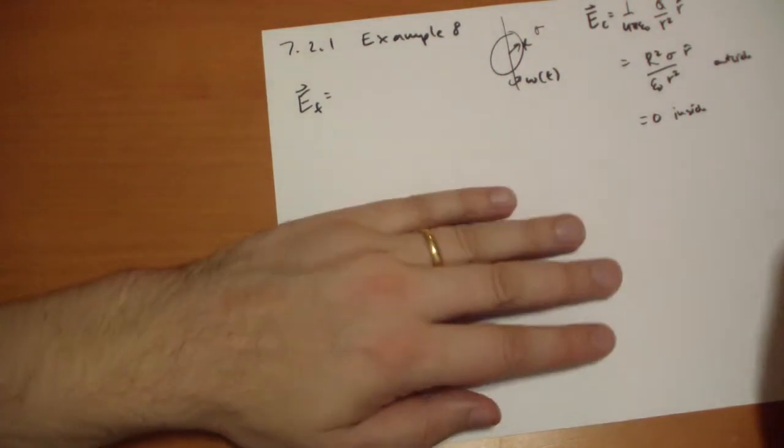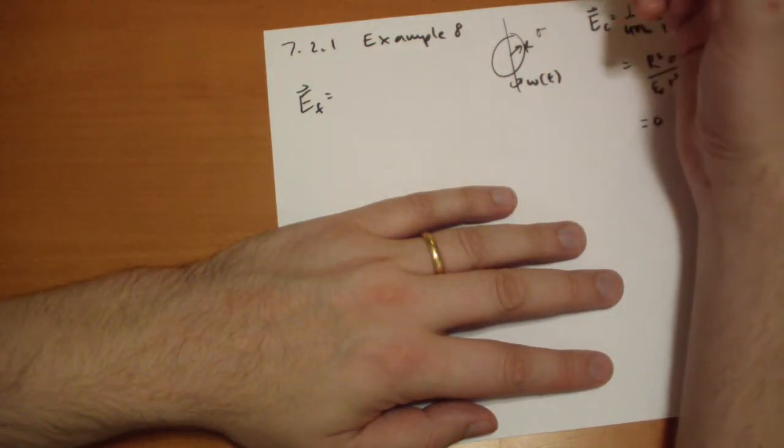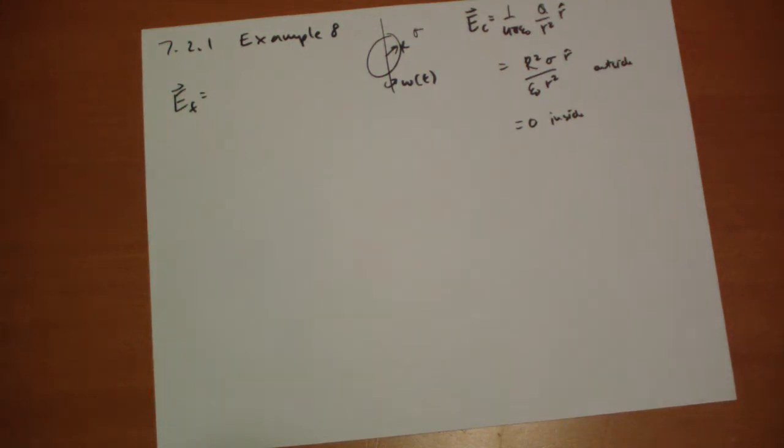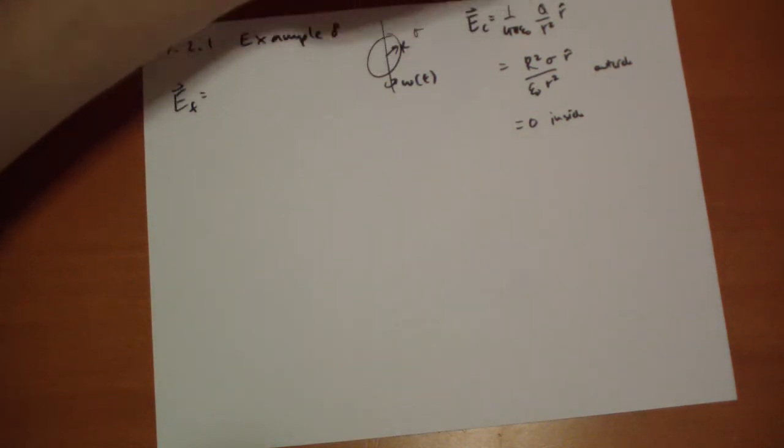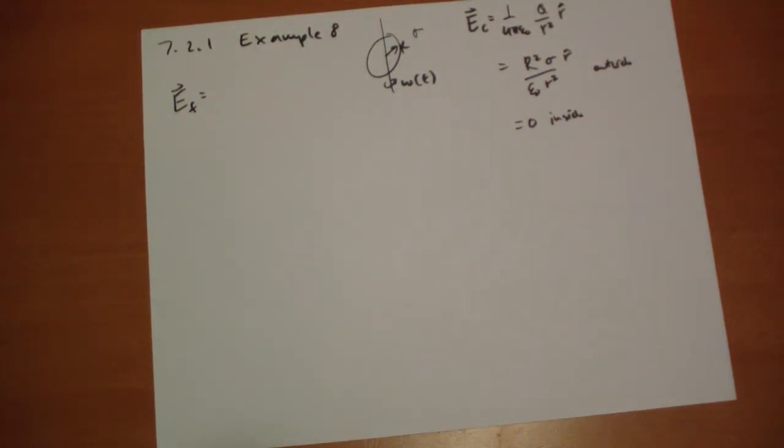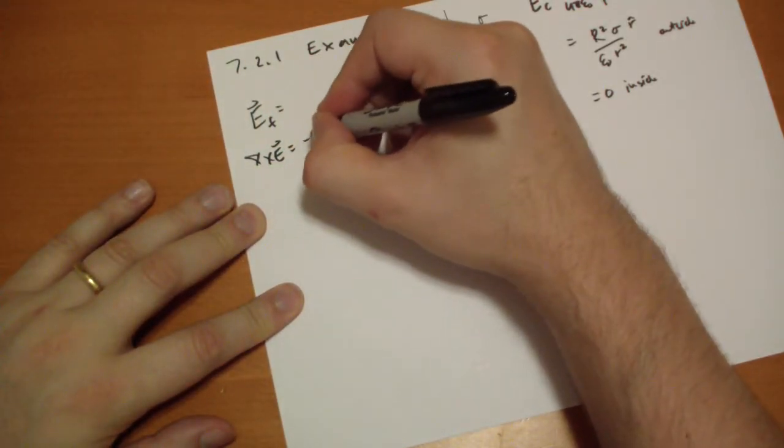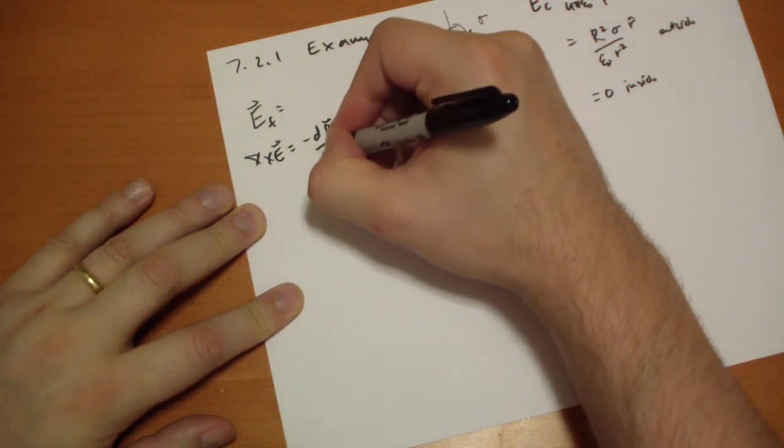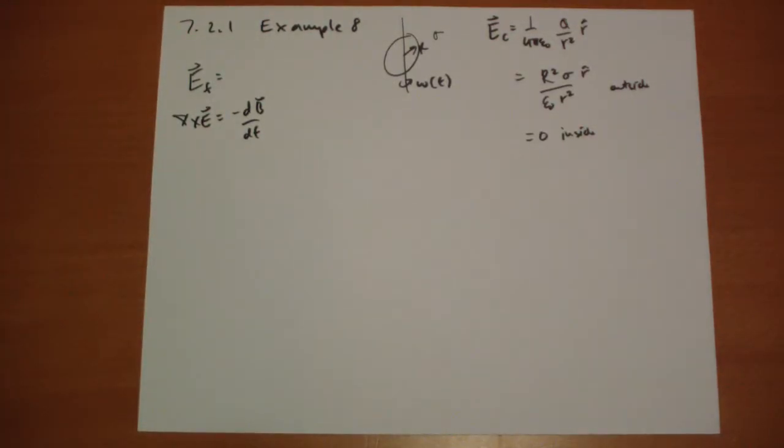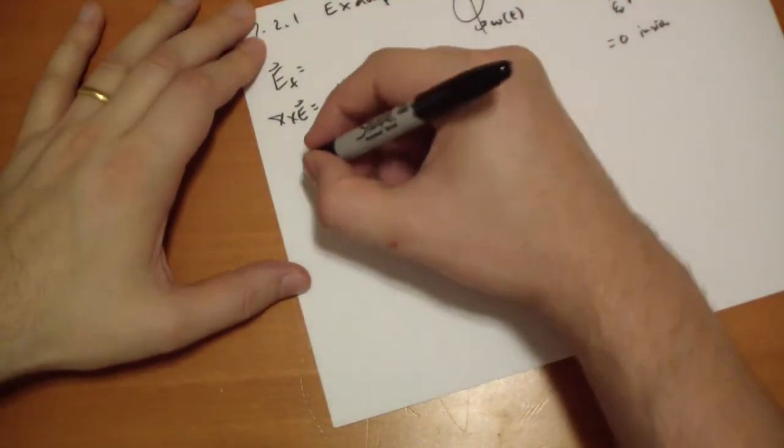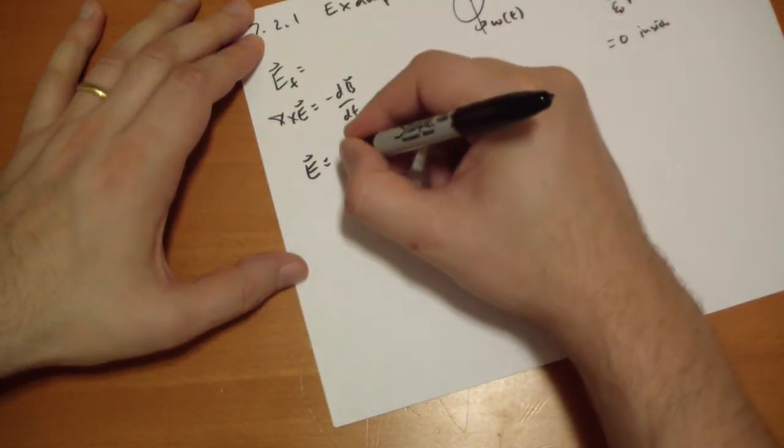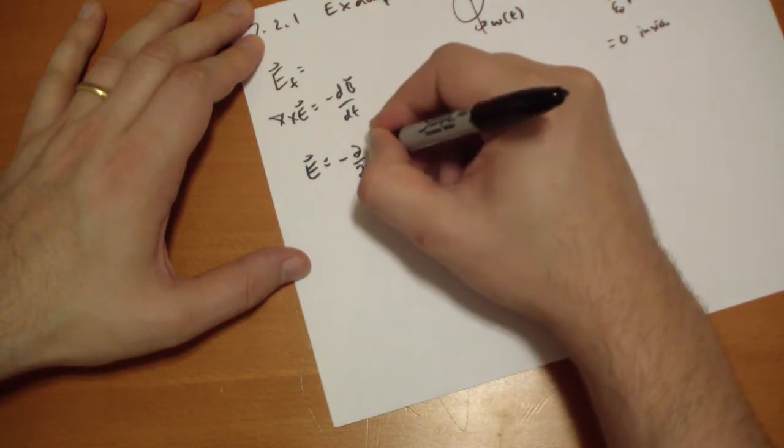So that is going to be equal to the change in magnetic field. Curl of E vector is equal to minus the change in the magnetic field over dt. We had this result as well of the A vector.